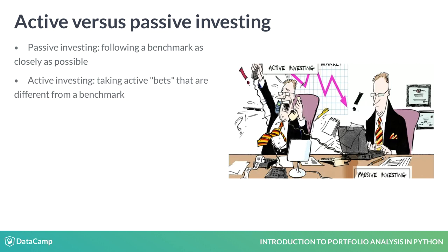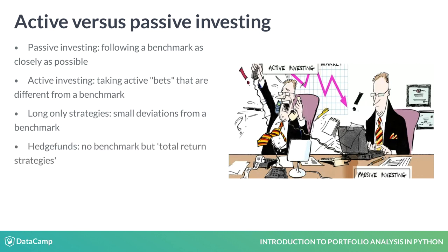An active investor typically tries to beat a benchmark or to maximize return for a given level of risk. Active investors pay close attention to market trends, shifts in the economy, changes to the political landscape and factors that may affect specific companies, and use that information to buy and sell stocks. Within the active space, long-only investment strategies try to outperform a benchmark, whereas absolute return hedge funds are not bound by a benchmark and just aim for the best possible risk-return trade-off.